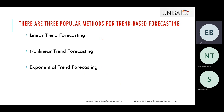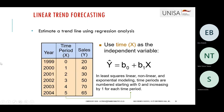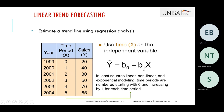In the last 30 minutes, let's cover forecasting. There are three popular methods: linear trend forecasting (almost exactly like regression), nonlinear trend forecasting (quadratic), and exponential trend forecasting. For linear trend forecasting, we use the regression model — Ŷ = B₀ + B₁X — where B₀ is the intercept and B₁ is the slope. We can use this model to forecast a new value in the future.